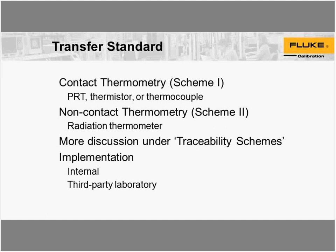For implementation, you can either implement one of these transfer standards internally or through a third-party laboratory. Scheme 2 — non-contact thermometry — is more likely to give you better uncertainties for a calibration. If you're doing a lot of calibrations of flat plates, it's probably not worthwhile buying your own radiation thermometer and maintaining traceability for it. That brings up the point that you probably want to use a third-party laboratory like ours here in American Fork, Utah.